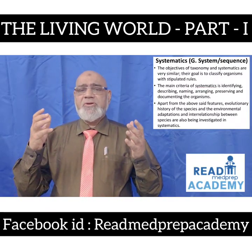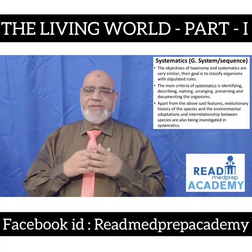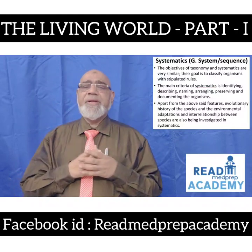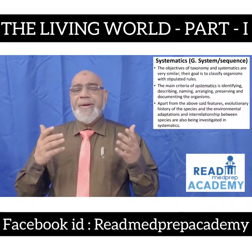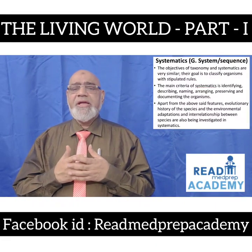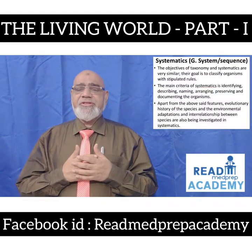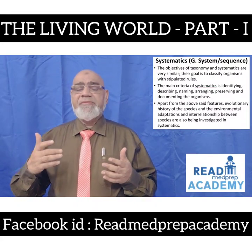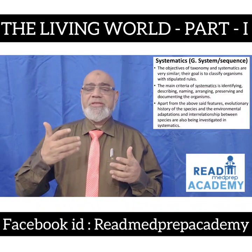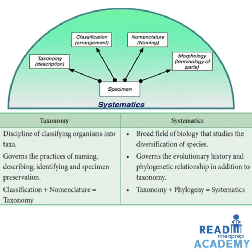What is systematics? Systematics is also a Greek word — system means sequence. The objectives of taxonomy and systematics are very similar; their goal is to classify organisms with stipulated rules. The main criteria of systematics are identifying, describing, naming, arranging, preserving, and documenting organisms. Apart from these, evolutionary history of species, environmental adaptations, and interrelationships between species are also investigated in systematics. The systematics specimen must be described taxonomically, classified with specific arrangement, named via nomenclature, and its morphology described with appropriate terminology.